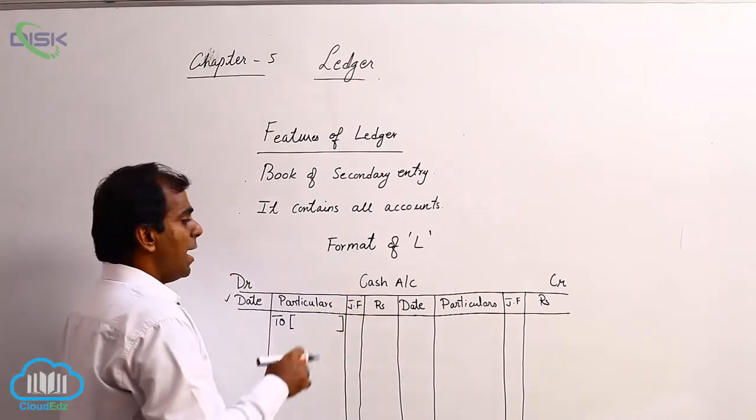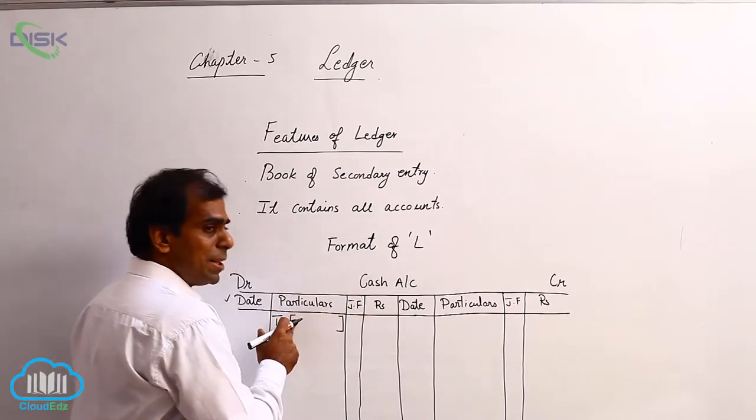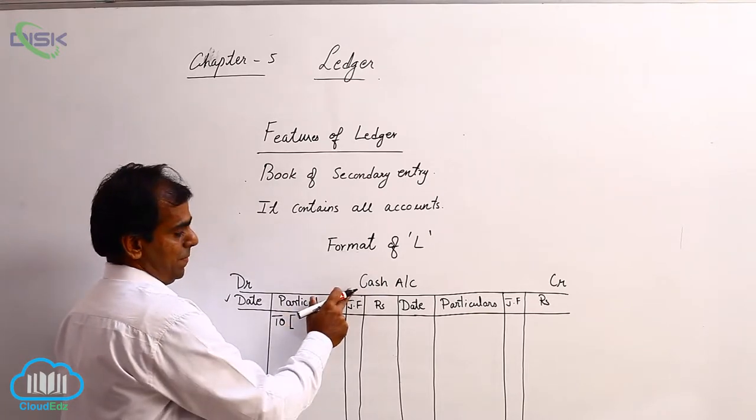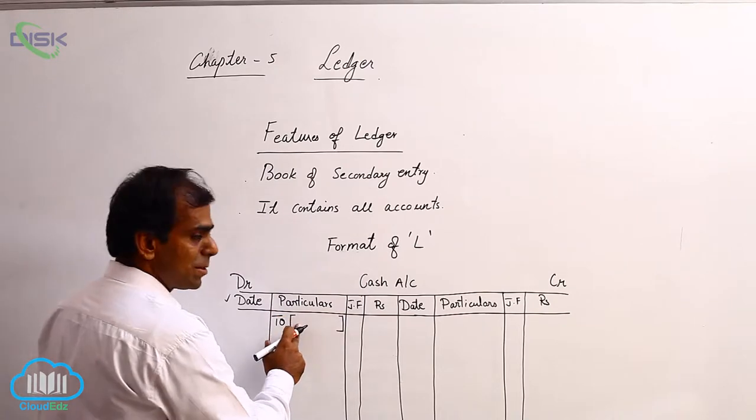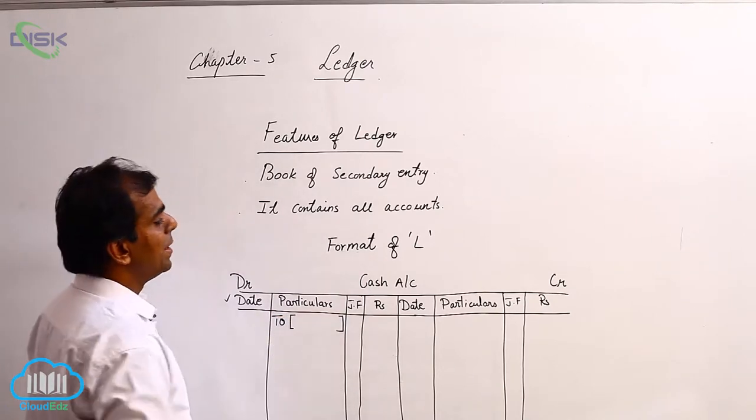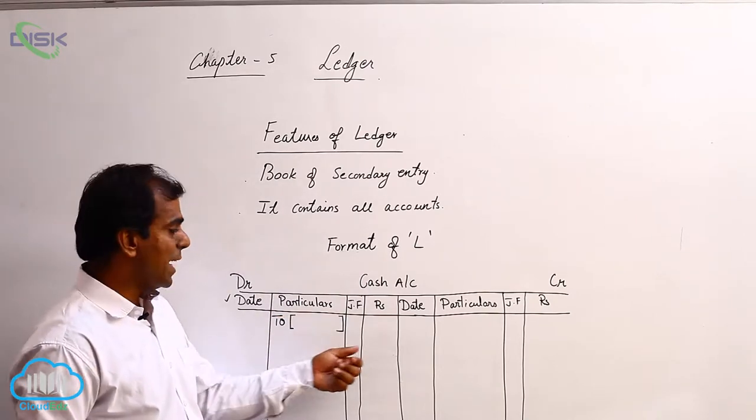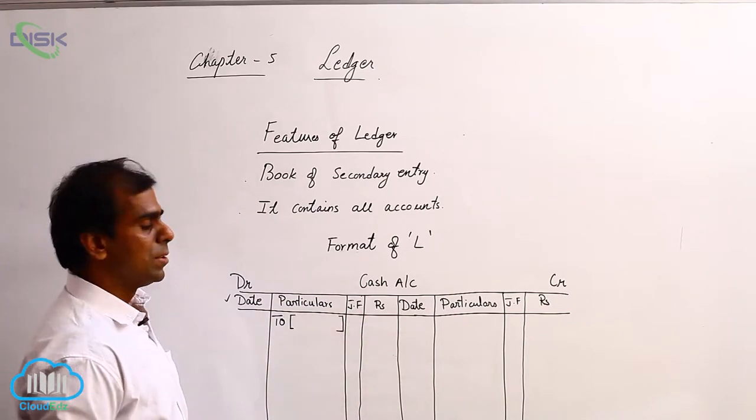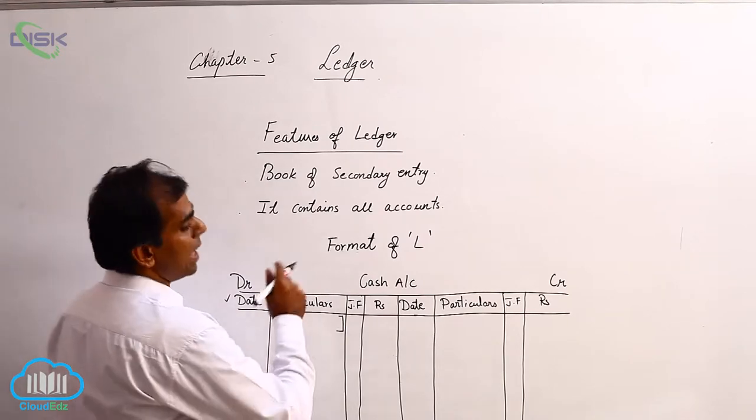then I am stating on the debit side the reason for debiting this cash. In the particulars column on the debit side, we are stating why we are writing this amount in the cash on the debit side.